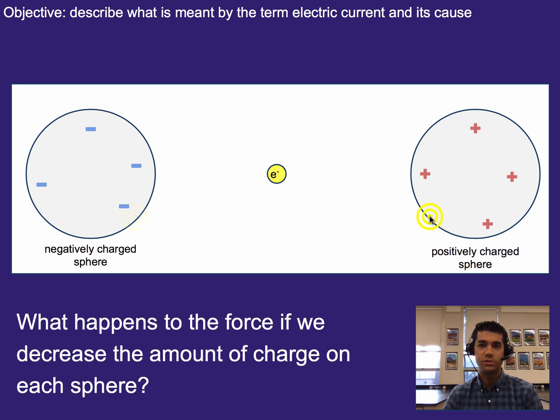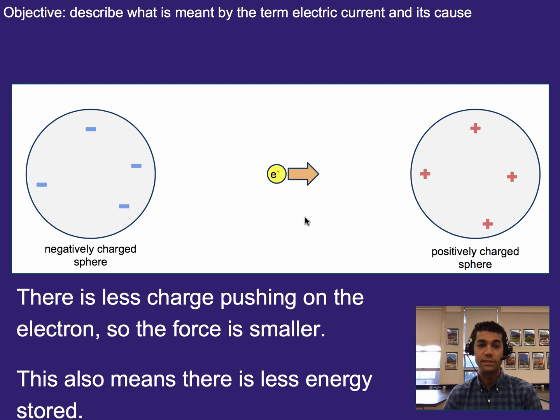Now, let's consider what happens if those spheres are not quite as heavily charged. So a little bit less negative and a little bit less positive. What do you think happens to the force then? Alright, hopefully you said it decreases. This would be less of a charge buildup here, so there is less force on it, and similarly, less of a charge here, so there is less force on our electron.